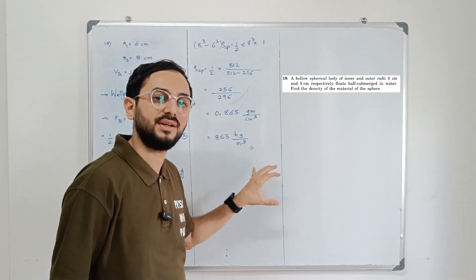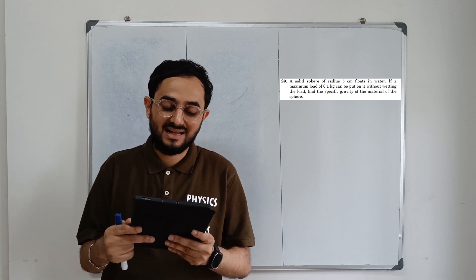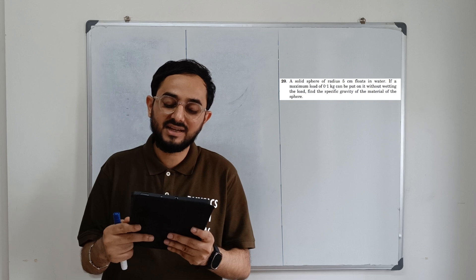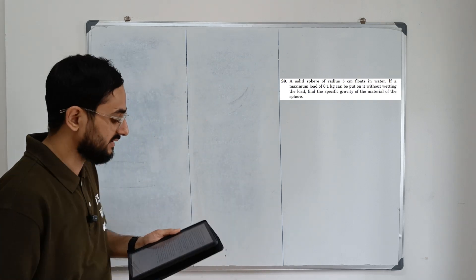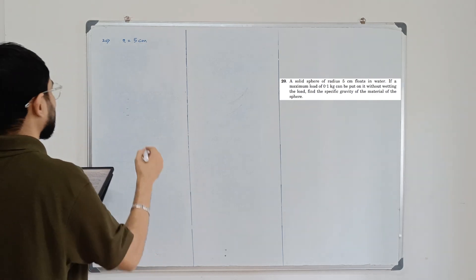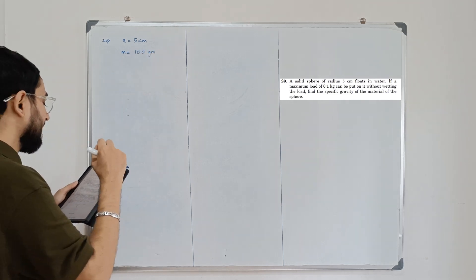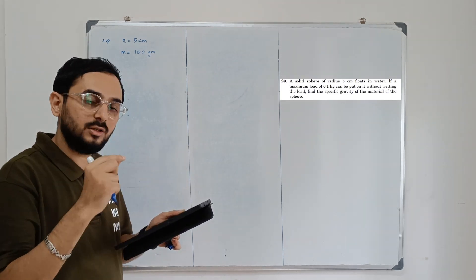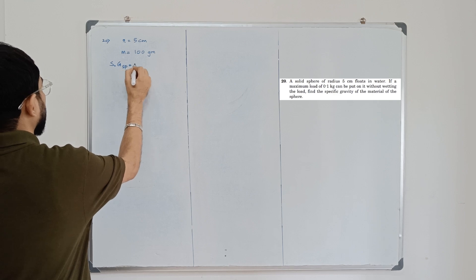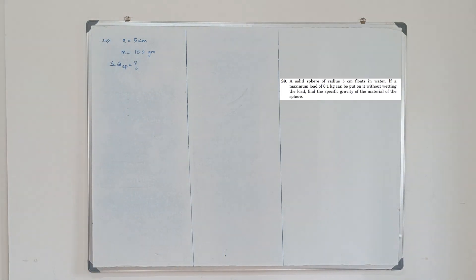Question number 20: A solid sphere of radius 5 cm floats in water. A maximum load of 0.1 kg (100 g) can be put on it without wetting the load. Find the specific gravity of the material of the sphere. So radius r = 5 cm, maximum load mass = 100 g, and specific gravity (relative density) of the sphere is what we need to find.